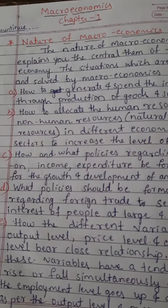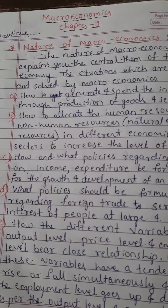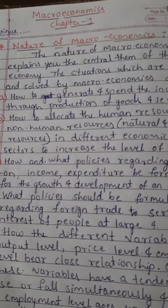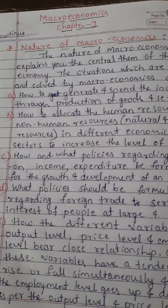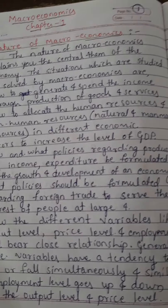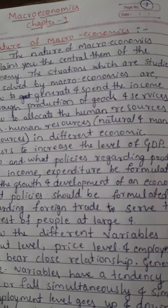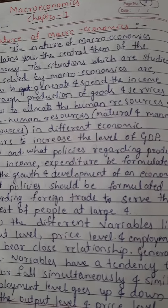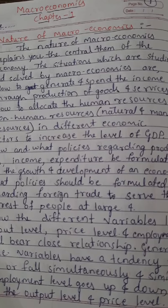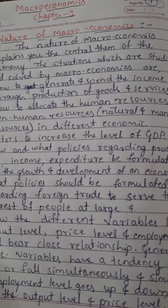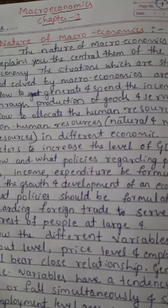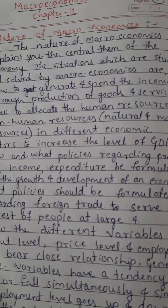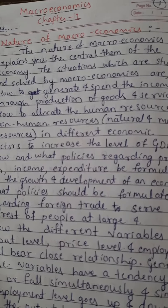The third nature: what policies regarding production and income expenditure should be formulated for the growth of the economy. The fourth nature: what policies should be formulated regarding foreign trade to serve the interest of the people at large — that is, policies on external trade, exports and imports of goods and services.